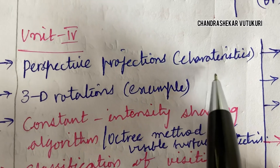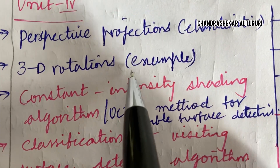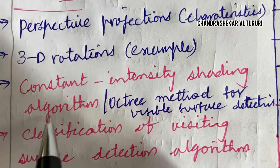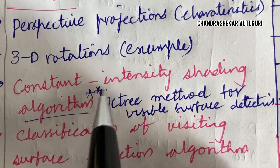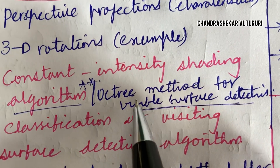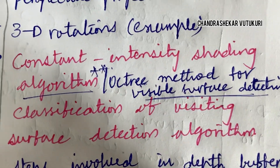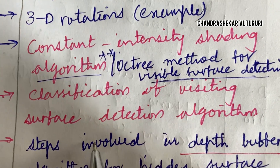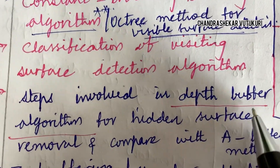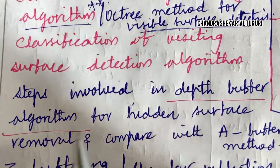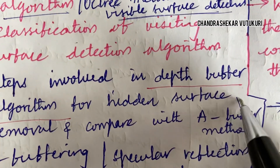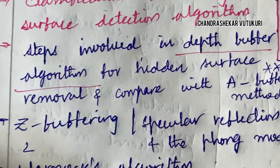Unit 4 is about the perspective projection characteristics. 3D rotation examples and constant intensity shading algorithm is said to be a topmost question. Octree method for visible surface detection — related to visible surface detection you are going to get one question for sure. Classification of visible surface detection algorithms is also key.